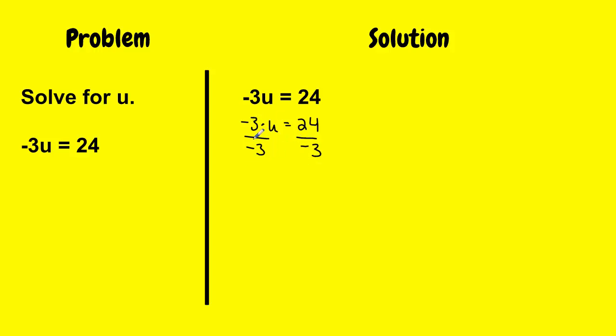So negative 3 divided by negative 3, I get 1u equals 24 divided by negative 3 is negative 8. And 1u is the same thing as u equals negative 8. So I just solved for the variable u, which was my goal.